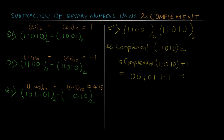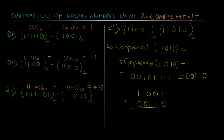Adding 1 gives us 00110. Now we've calculated the 2's complement of the second number. We just need to add this with the first number: 11001 plus 00110. Taking the addition, we get 11111.